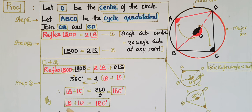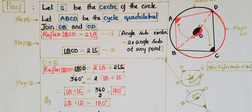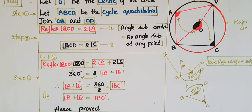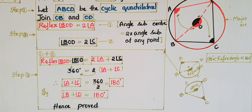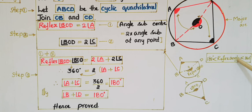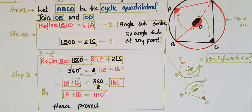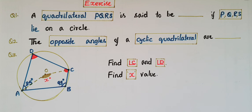Similarly, if you join OA and OC, you can write the same equations, giving angle B plus angle D equals 180 degrees. So we can say that the sum of either pair of opposite angles of a cyclic quadrilateral is 180 degrees, or supplementary. Supplementary means the sum of angles is 180 degrees. Note that a reflex angle is less than 360 degrees and greater than 180 degrees.